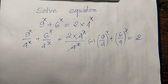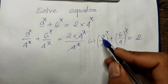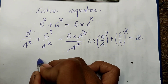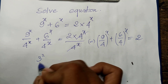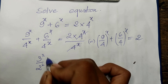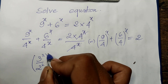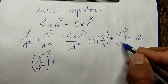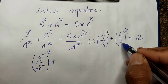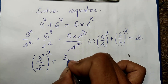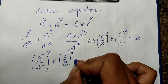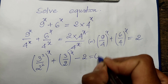Now, 9 equals 3 squared and 4 equals 2 squared. So we get (3²/2²)^h, which is (3/2)^(2h). Plus, we simplify 6/4 by dividing both by 2 to get (3/2)^h. All power h, minus 2 equals 0.